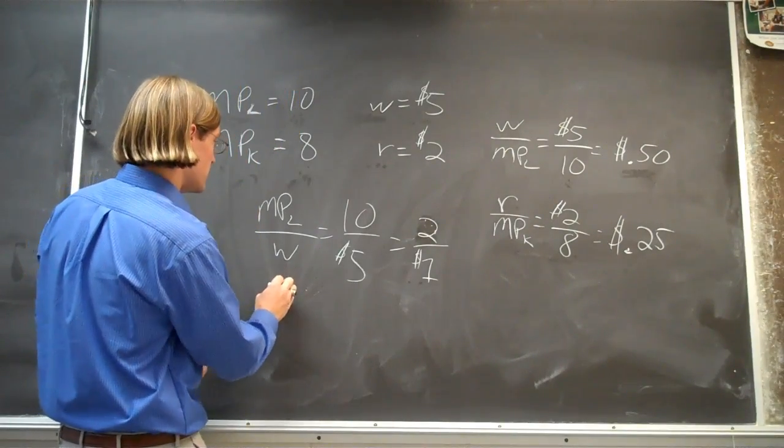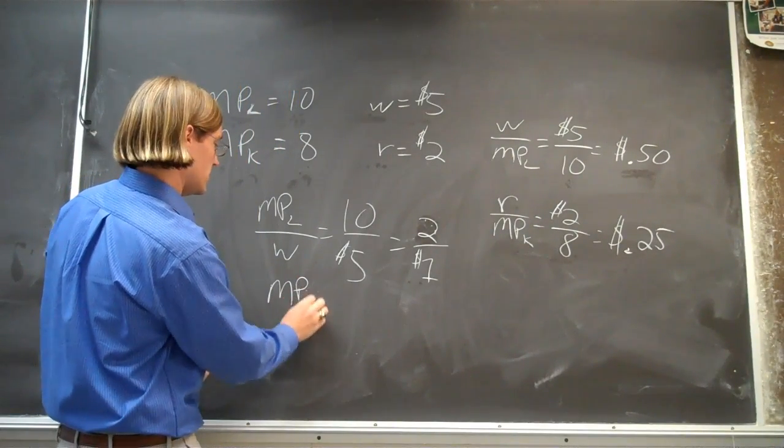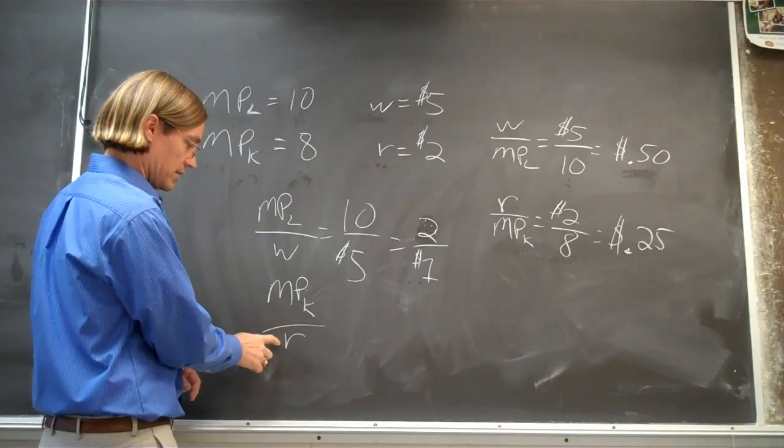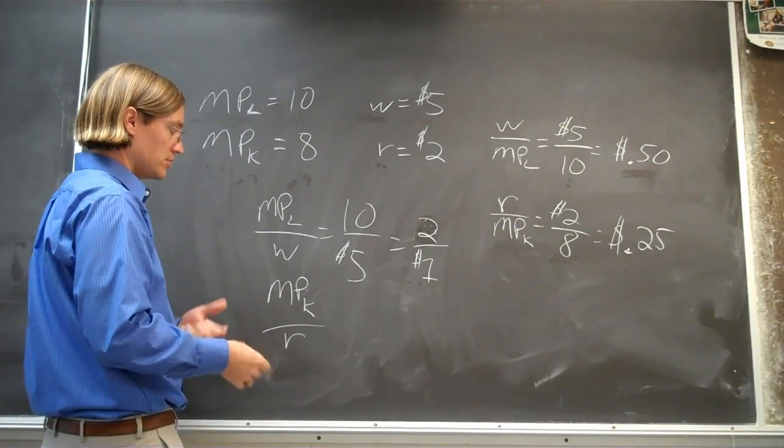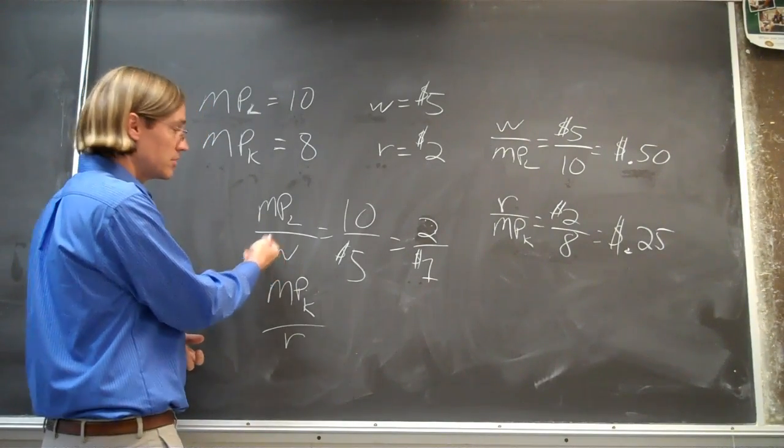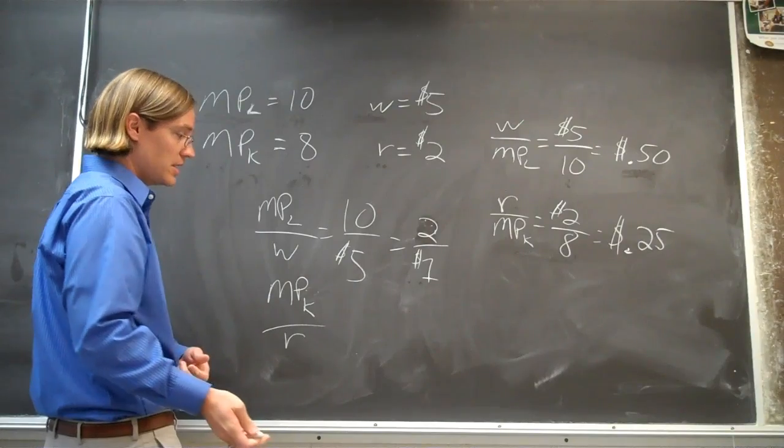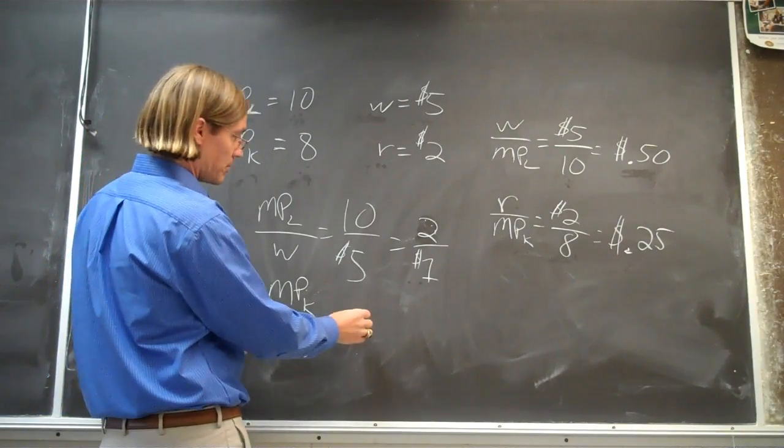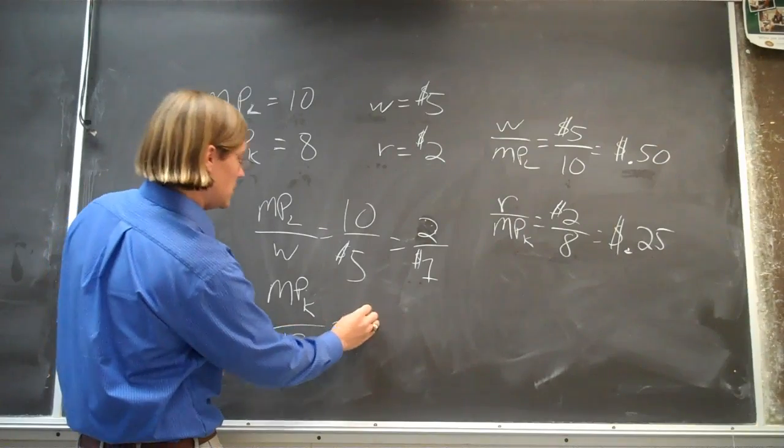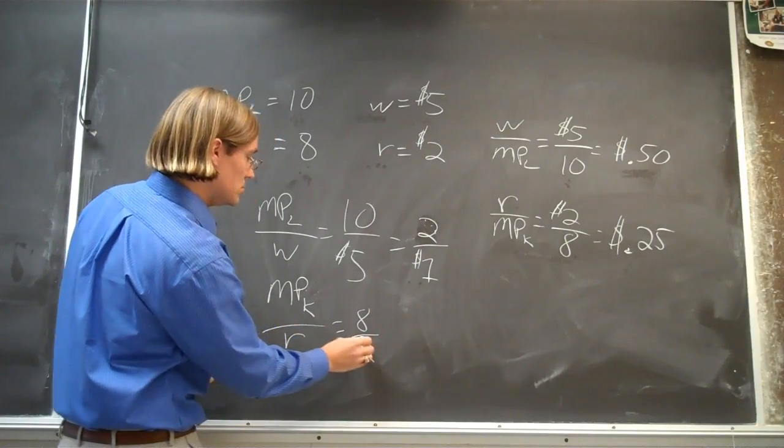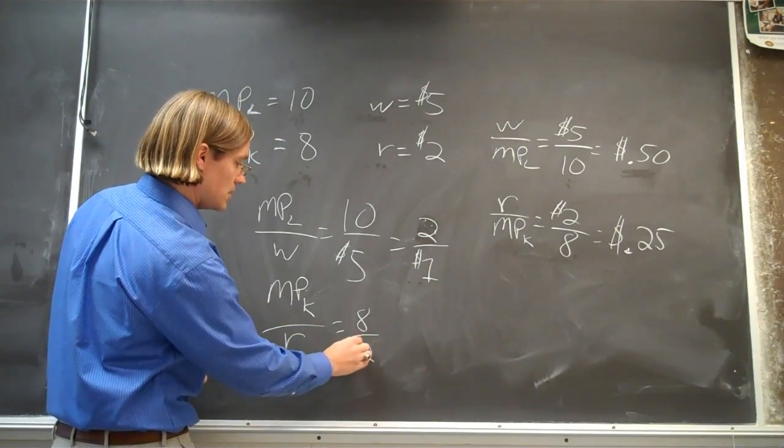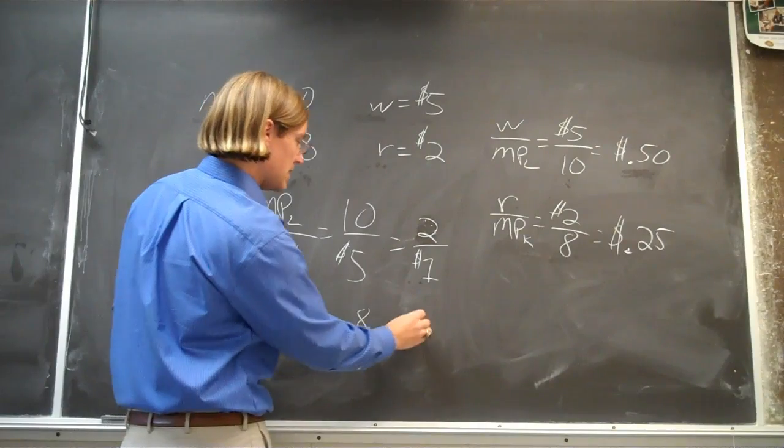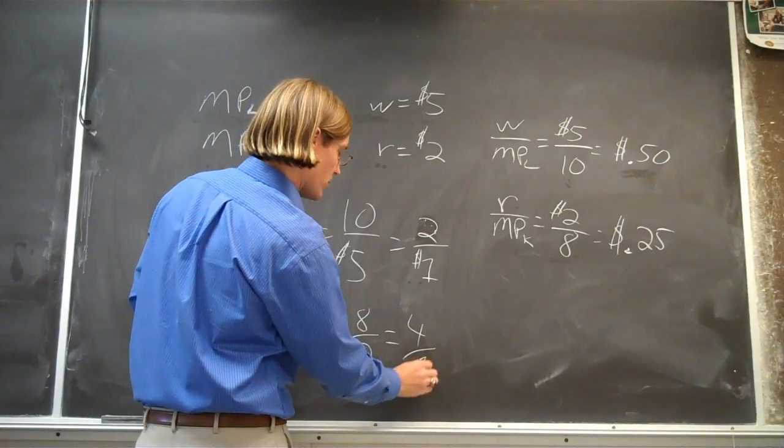If you were to do the same thing, the marginal product of capital divided by the rental rate, that rate, like the wage rate here to employ a person, but the rental rate is the rate to get that unit of capital, to be able to use that unit of capital. And that should be 8 divided by 2, 2 dollars, reduce that down to 4 to 1.